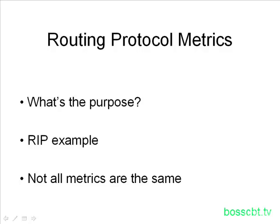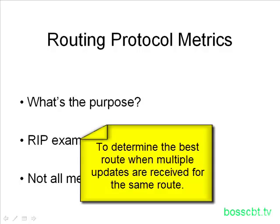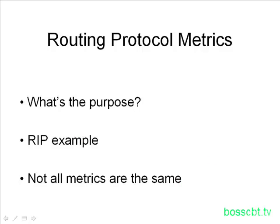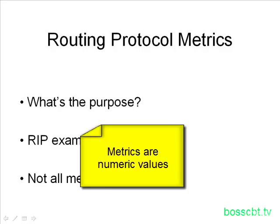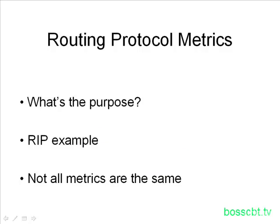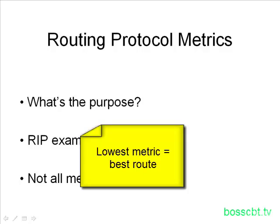The purpose of a routing protocol metric is to determine the best route when multiple routes are learned. A router could receive routing updates from several other routers all about the same network, and it needs a mechanism to determine the best one. That's where the metric comes into play. A metric is a numeric value, and it's different between each routing protocol — it could be a small value or a very large value. The routing protocol will look at the metric of all similar routes and use the lowest metric to determine the best route.